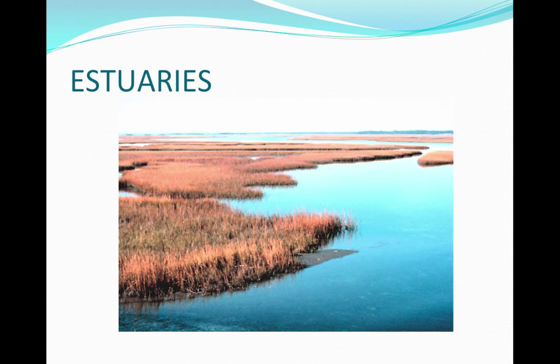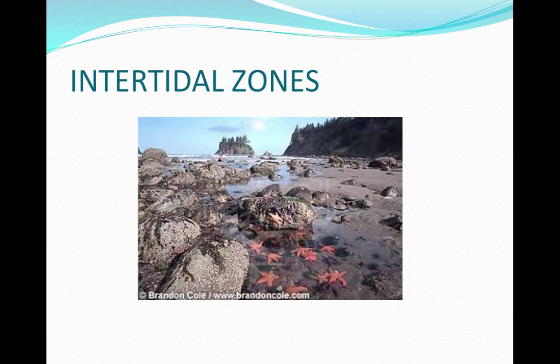Estuaries are where rivers meet the sea, featuring high tides and low tides — high tide brings seawater into the estuary and low tide sees it leave. Humans fill, dredge, and pollute these biomes. Intertidal zones are marine shores that are submerged during high tide and exposed during low tide; humans impact them through oil pollution, walls, and barriers.